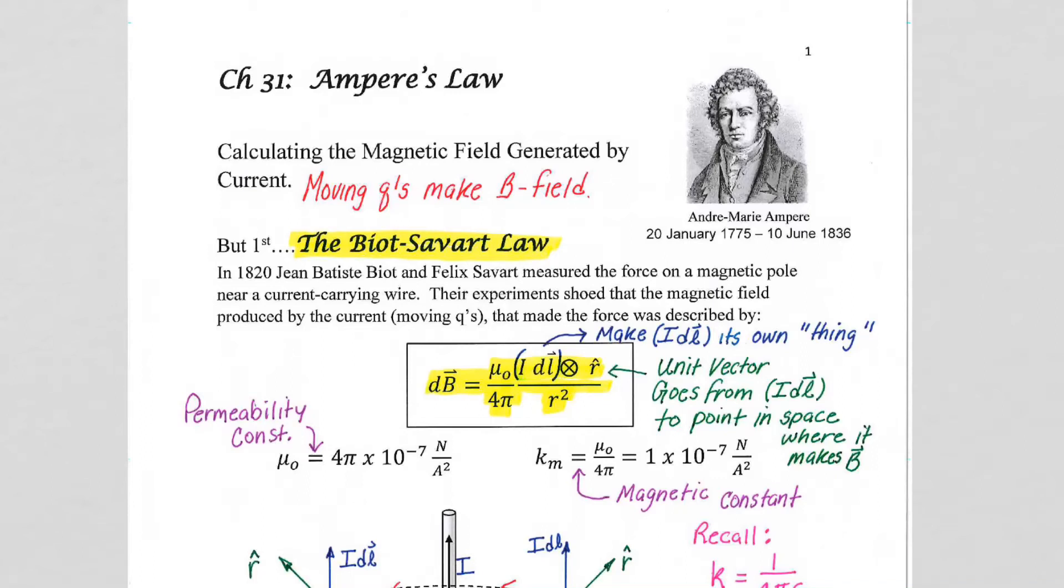Chapter 31, Ampere's Law. We're going to continue looking at magnetic fields, and just like we did in Chapter 30, the first thing that we wrote down was that moving Q's make B field. Please write this down again. It is the most important thing we focus on. You need moving charge to make B field.